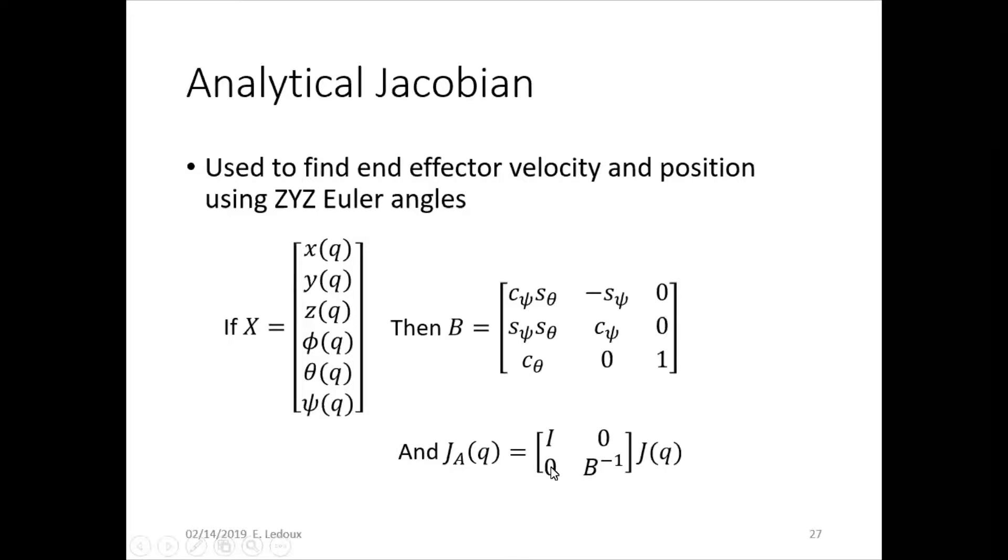And then also a zero matrix bottom left, and the B you calculate from those Euler angles. So you calculate that and then plug it into this formula. Then you multiply all of that by the standard Jacobian, and you can get the analytical one.